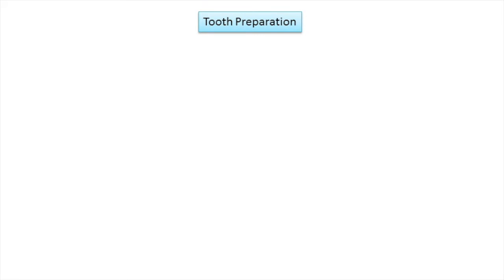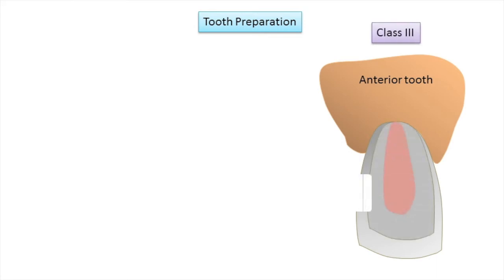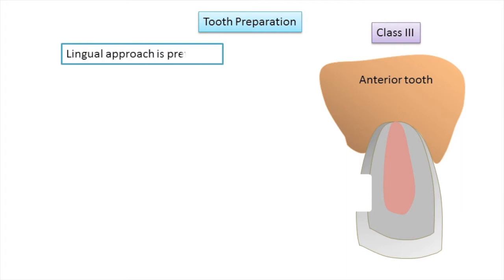The next step is tooth preparation, which will be covered separately for anterior and posterior teeth because cavity design differs based on different classes of caries. For anterior teeth, we first discuss Class 3 restorations. Class 3 caries is smooth surface caries found on the proximal surfaces of anterior teeth, usually slightly gingival to the proximal contact, but not involving the incisal edge. The approach may be from the facial or lingual direction.